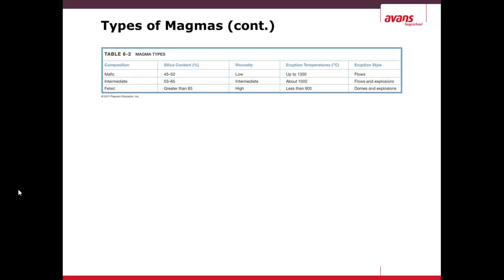Here we have three different types of magma. From mafic, which has a lower amount of silica and therefore low viscosity — viscosity is low in mafic, which has low silica content. It erupts at a very high temperature and flows easily.